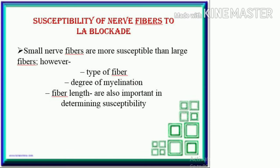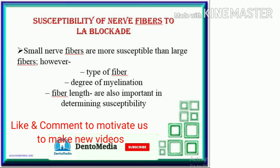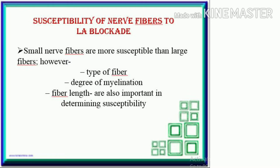Susceptibility of nerve fibers to local anesthetic blockade: small nerve fibers are more susceptible than large fibers. However, type of fiber, degree of myelination, and fiber length are also important in determining susceptibility.